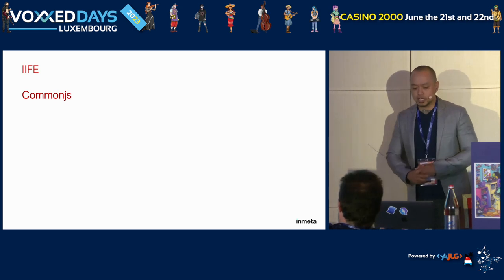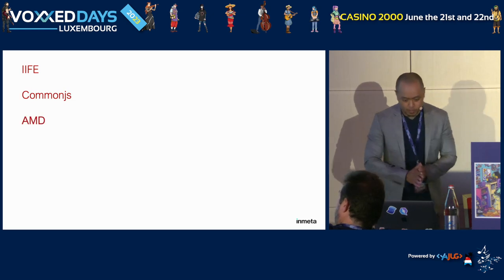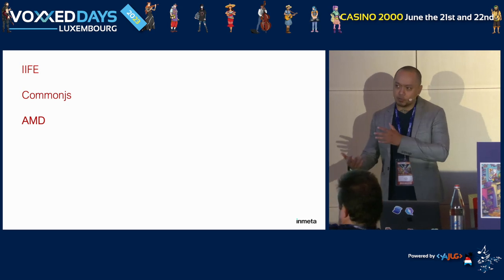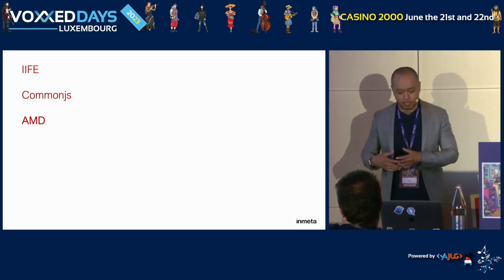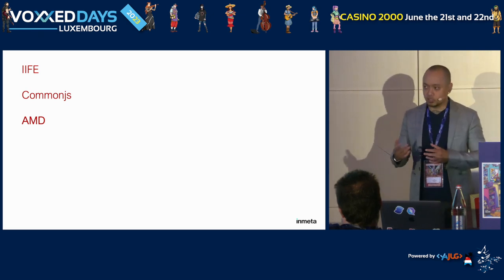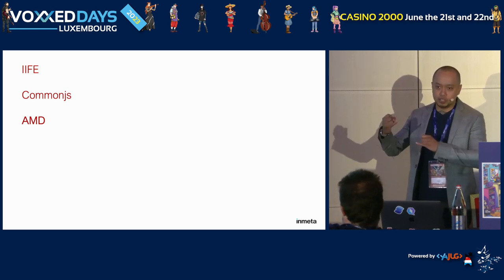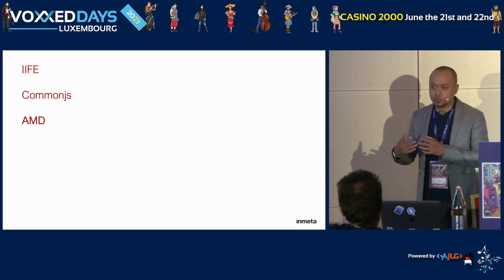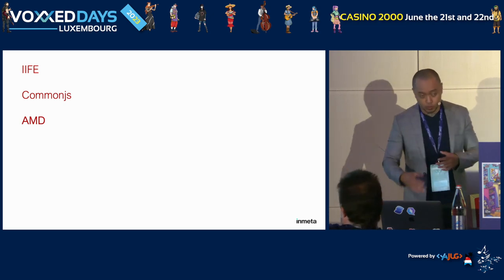Next, CommonJS — built for Node.js originally and synchronous. We also have AMD, Asynchronous Module Definition. An example of AMD is RequireJS, which is a library. AMD fixes dependency resolution and pollution of the global scope. We use CommonJS and AMD to share libraries through npm packages. But how do we use CommonJS in the browser if it's built for Node.js and synchronous?